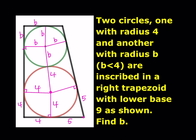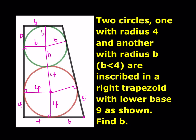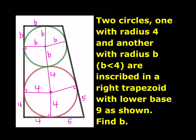One thing we need to find is the height of this trapezoid. We do know the radii, so we can use this little trapezoid formed by the centers. Let's drop a perpendicular there — this is b and this is going to be 4 minus b. We have a right triangle here. The height, let's call that h, and this is also h.